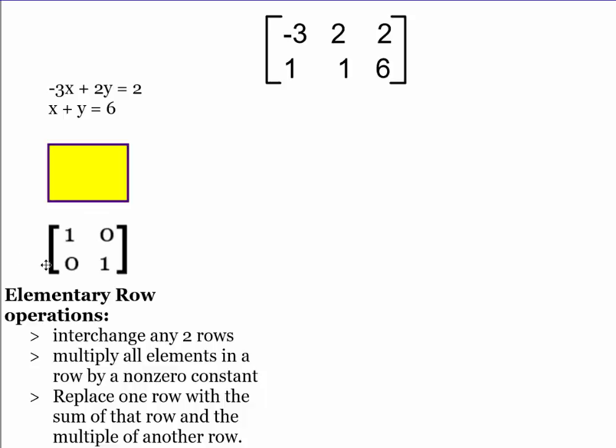We are going to try to get this identity matrix. So the 1, 0, 0, 1 is going to, if we can get the first two to have this 1, 0, 0, 1, then our last two numbers are going to be the answer. It's going to be our x and our y.